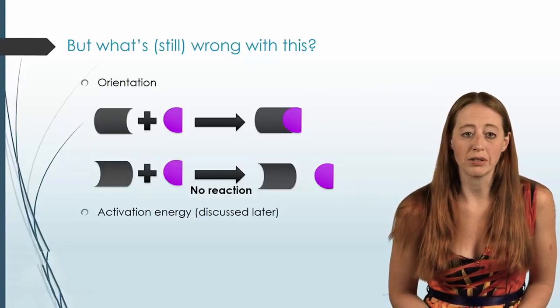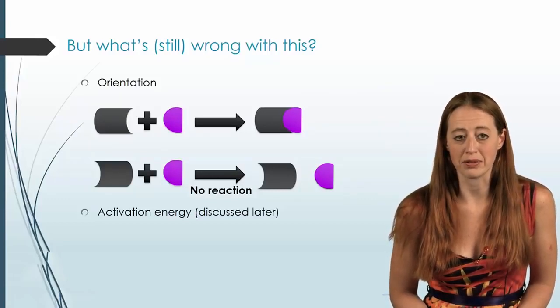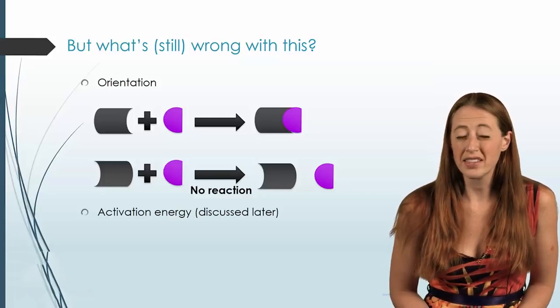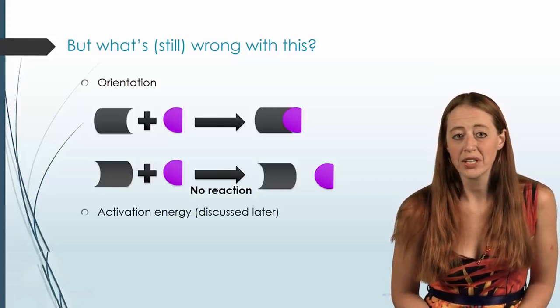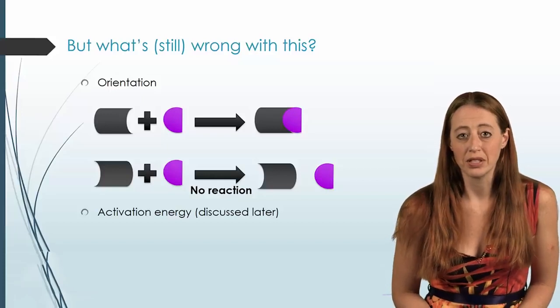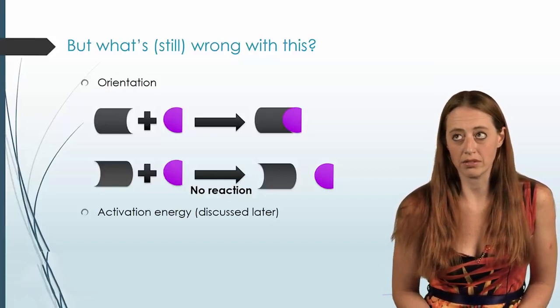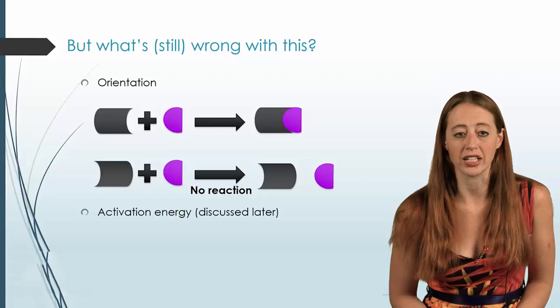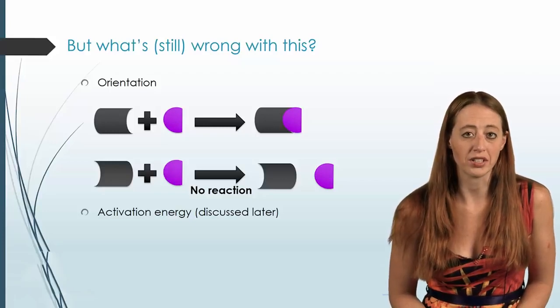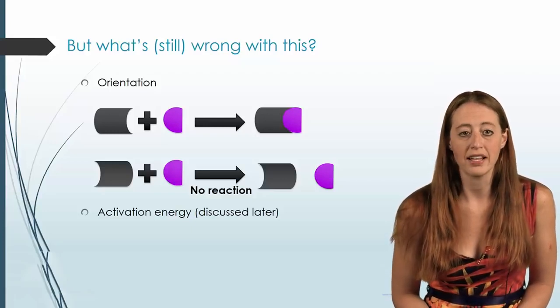So before we talked about many things that matter when it comes to the rate law. For instance, orientation. We said that sometimes even with a mechanism, you can't tell the experimental rate law, or you can't determine the experimental rate law for sure, because things such as orientation could cause you to need more reactant than one might expect.